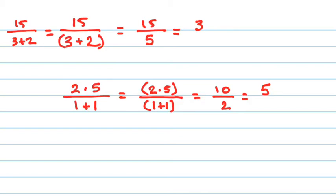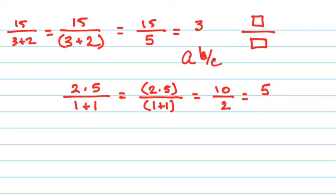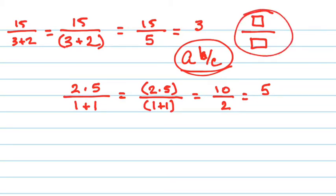A student tested 15 over (3 plus 2) on their calculator — first without brackets, then with brackets — and got 3 both times. The teacher asked whether they were using a scientific or graphing calculator. The explanation: some calculators, particularly graphing calculators that use a fraction template where numbers are entered into a visual fraction bar, can tell that the denominator expression belongs together and handle order of operations correctly.